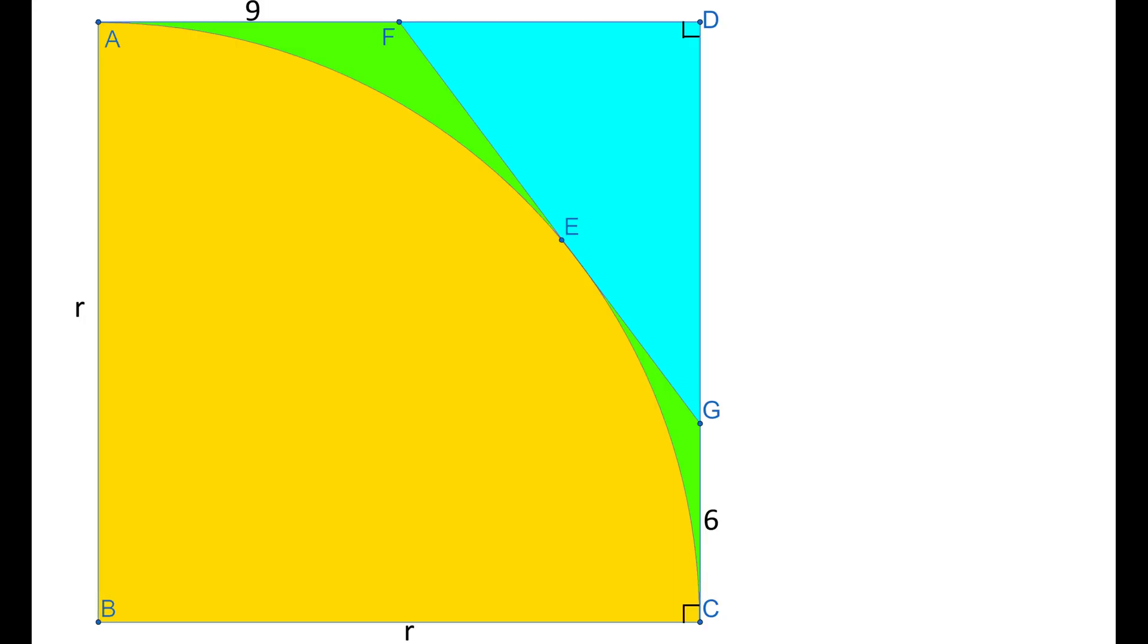If we look at the diagram again, point F is a point external to the quarter circle, where the two tangents AF and EF meet. Applying the theorem, AF is the same length as EF. EG and CG are both of length 6 units, by the same theorem.